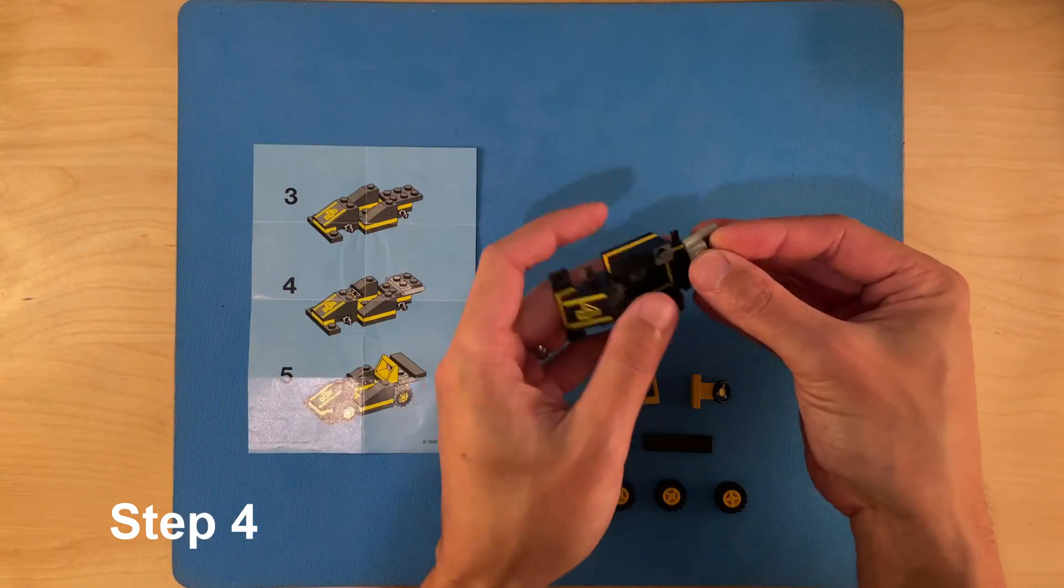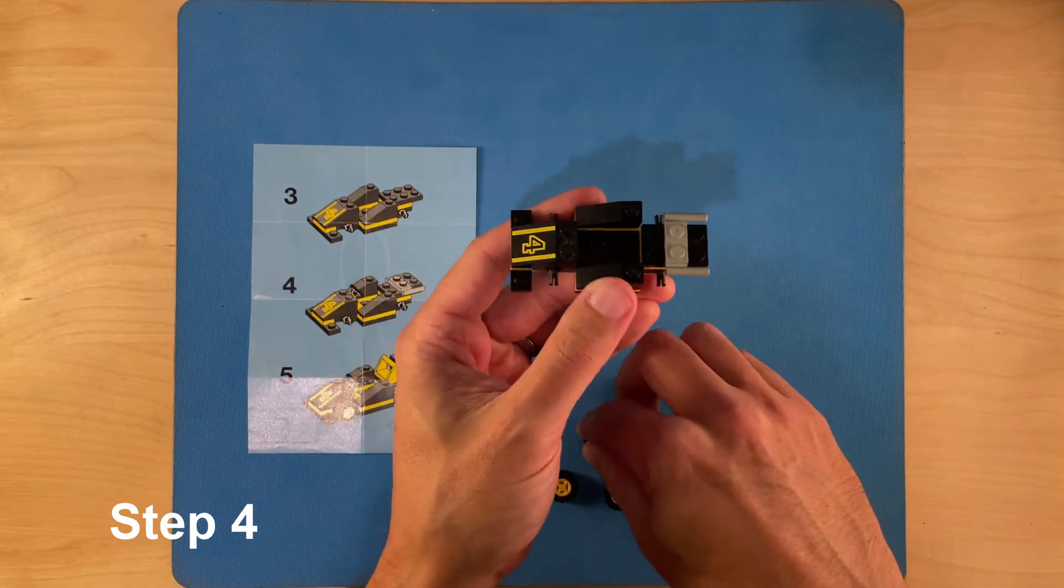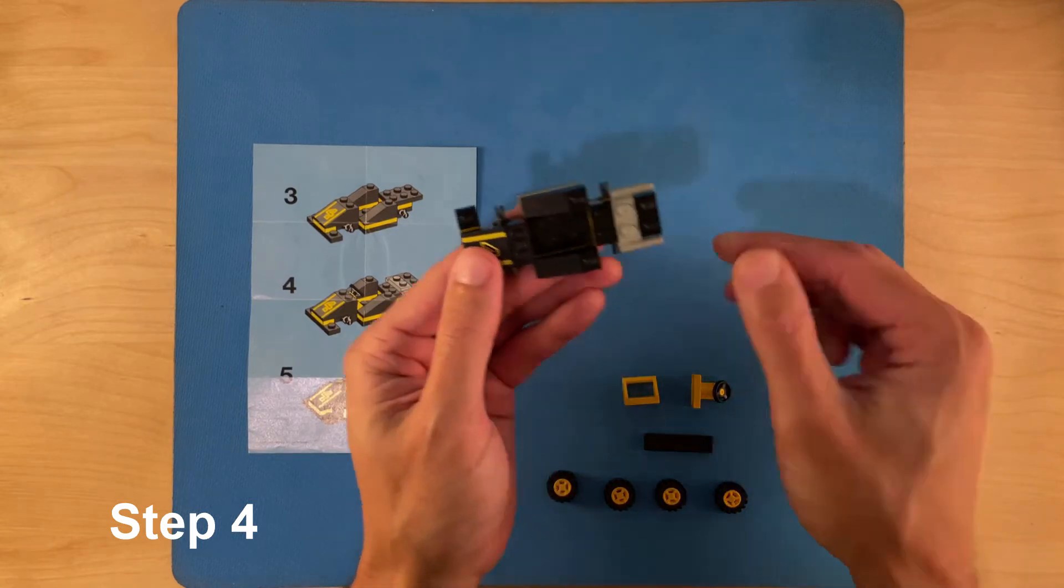Next up this rear grey part, which is the exhaust system. And this 1x2 black plate goes just behind it.